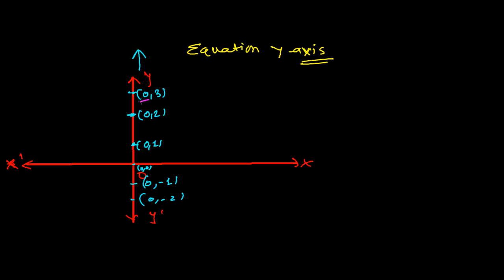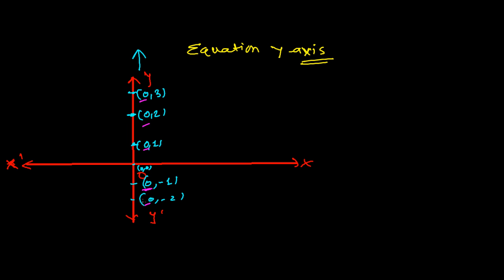Every time you look at any point on the entire y-axis — whether you're going in the negative y-axis or the positive y-axis — your x-coordinate is always zero. So on the y-axis, x equals zero. That is the equation of the y-axis.